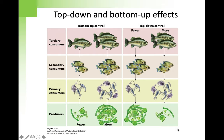The popular idea at the time was that the number of producers limits the number of herbivores, and in turn the number of herbivores limits the number of predators. Every level was regulated by the amount of food from the bottom of the food chain going up. But this view didn't explain why herbivore populations don't simply grow to the point where they eat all of the leaves on the tree.